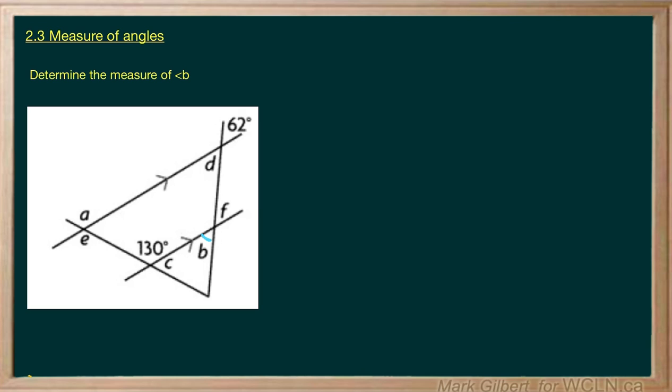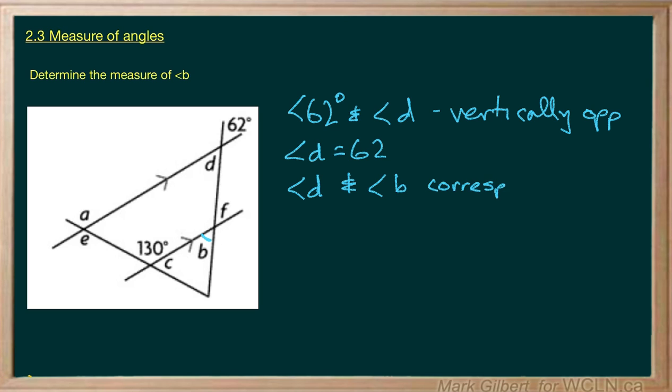We could do that 62 and angle D are vertically opposite. So they are equal. So angle D equals 62. And then angle D and angle B are corresponding.